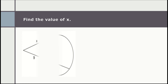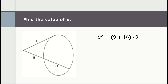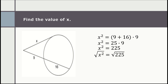Let's find the value of X in the given figure. Since X is the measurement of the tangent, we square it. The secant segment measures 9 + 16 and the external secant segment is 9. So: X² = (9 + 16) · 9 = 25 · 9 = 225. Taking the square root, X = ±15. Since we are looking for a measurement, we accept only the positive value: X = 15.